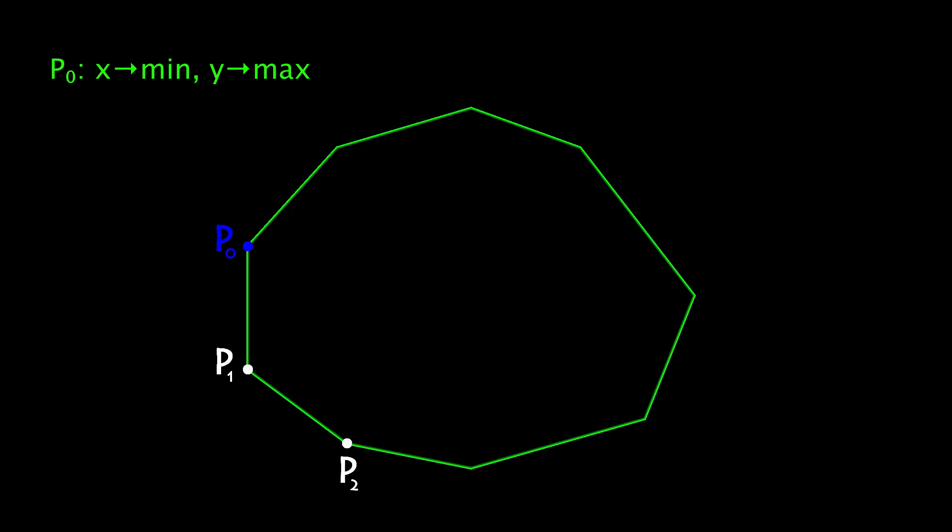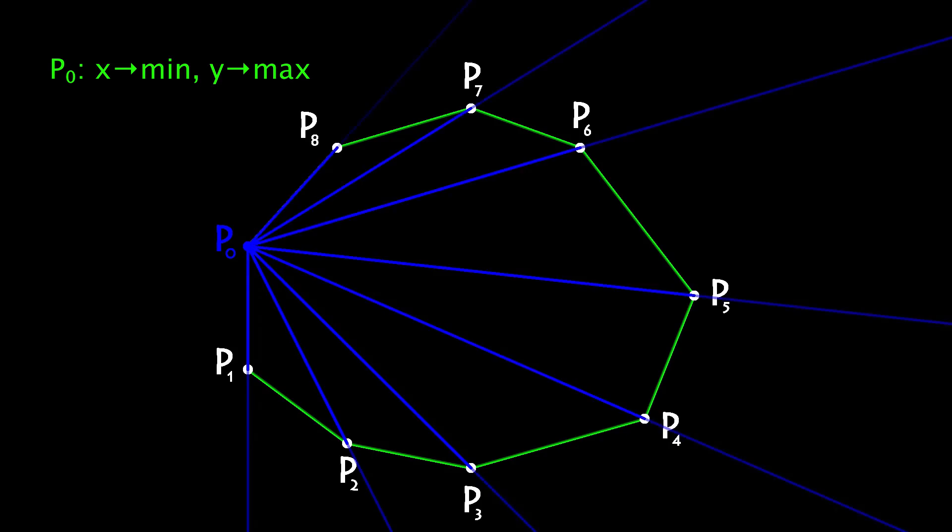Now we can see that all other points are sorted by the angle around P₀. We can divide our polygon into n-2 sectors. Our point can be in any of those sectors, or outside of angle P₀.